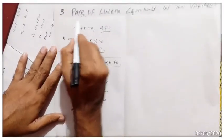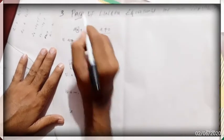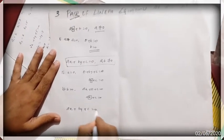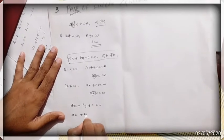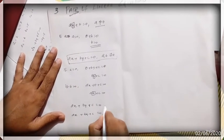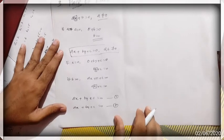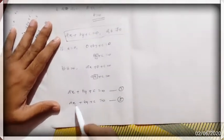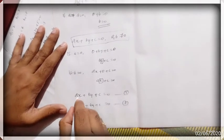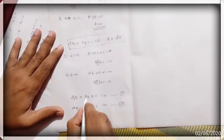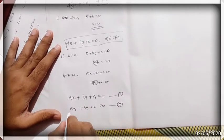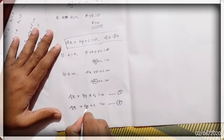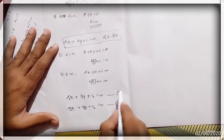Now we are going to discuss the pair of linear equations in two variables. A pair of linear equations means two equations: one equation and a second equation. To distinguish between them, we write them as a₁x + b₁y + c₁ = 0 and a₂x + b₂y + c₂ = 0. This is the pair of linear equations in two variables.